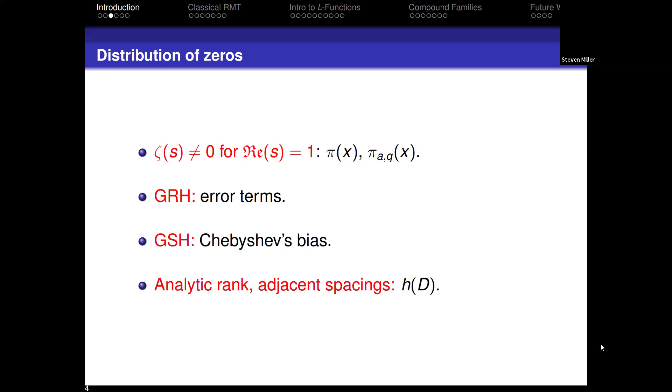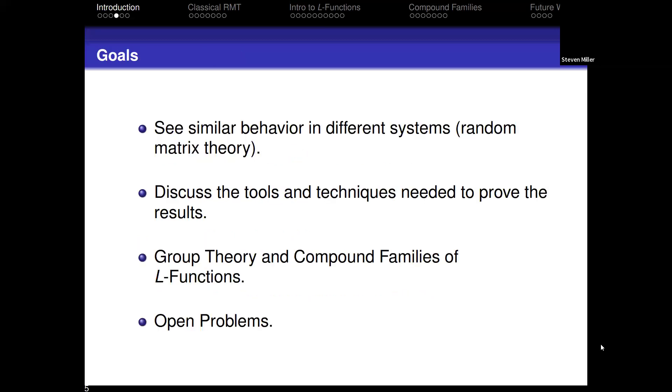If you just know that the Riemann zeta function has no zeros with real part equal to one, that gives you the main term of the prime number theorem. If you start knowing some region where it has no zeros, then you get error terms. If you start knowing the grand simplicity hypothesis, which assumes that these zeros are algebraically independent, then you start getting Chebyshev's bias that most of the time there are more primes 3 mod 4. A lot of problems in number theory—the more you know about the zeros, the more you can say.